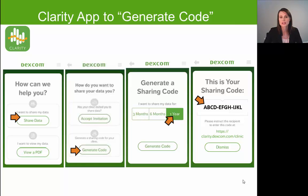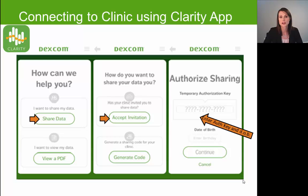If you select 'Generate Code,' it will provide a 12-digit code that you can give to your physician. If your physician uses that code, it will grant them access to all the glucose information ever uploaded into your Clarity account. You can choose how long to make that code valid: three months, six months, or one year — we recommend one year as it really simplifies things. The other option is an email invite: if your physician's office has a Clarity healthcare provider account, they can send you an email with a temporary authorization key valid for 30 days, which you enter under 'Accept Invitation' in the Clarity Report app.